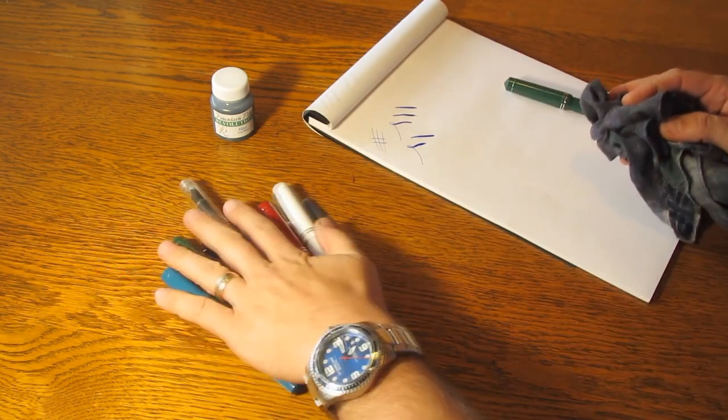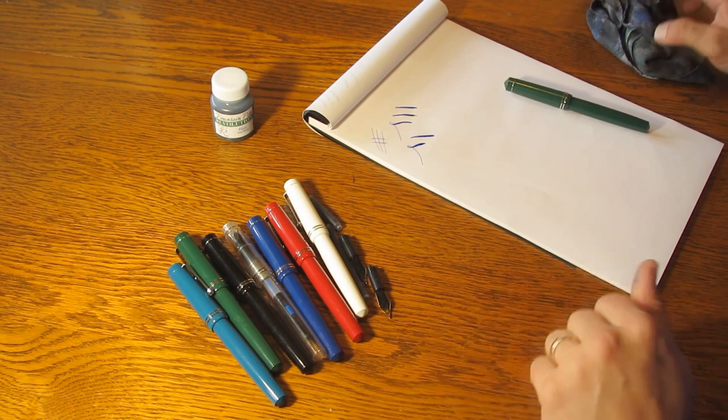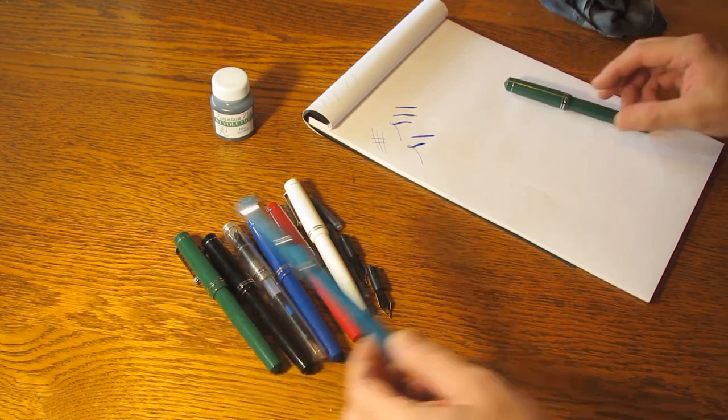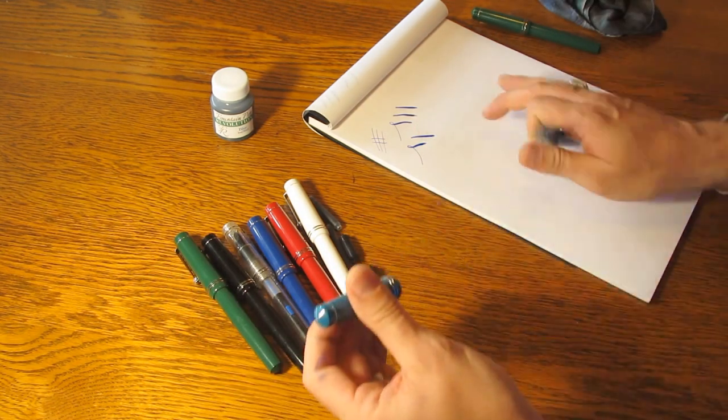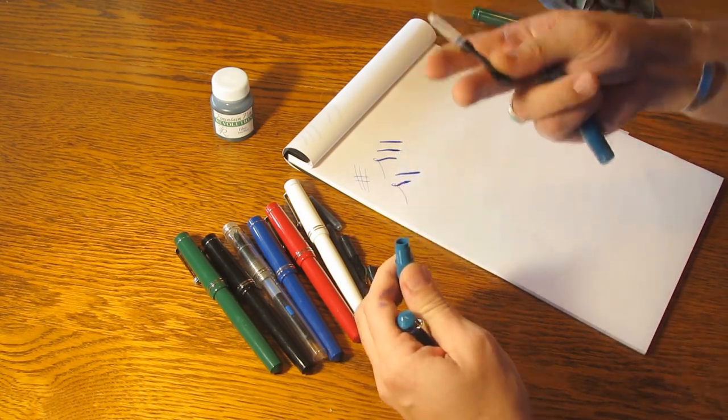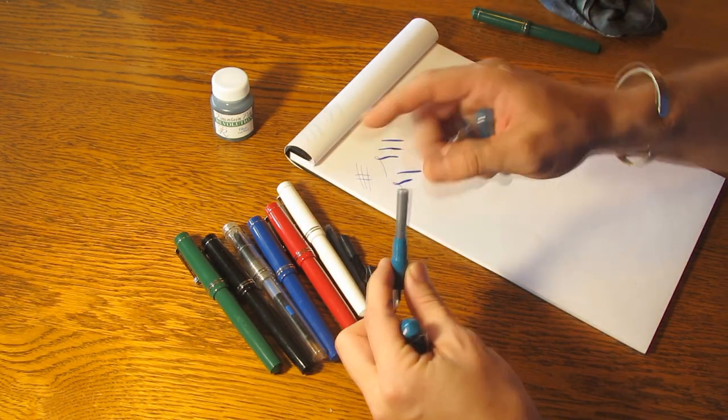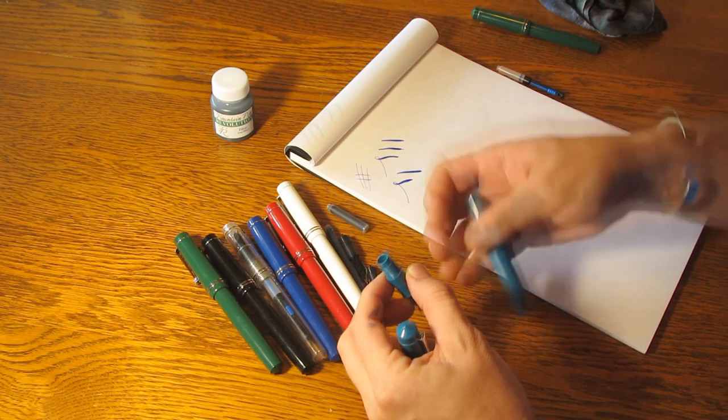The pen comes in all the colors you see here. We've got teal and green and black and clear and blue and red and white. Let's talk about how to disassemble the pen. Very simple on this pen. All you'll do is unscrew the section. You've already seen the converter, so you can remove that for cleaning. You can use cartridges if you want and press those into the back of the section like that.